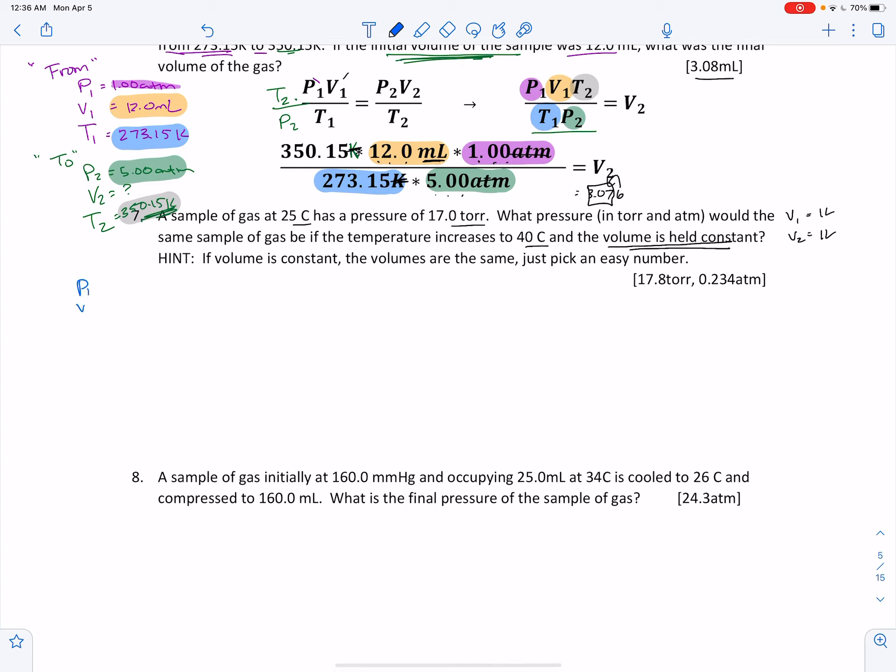So P1, V1, T1. Again, I'm looking for a pressure unit. Here is a pressure unit. 17.0 torr. I'm looking for a volume. Remember, this says constant. And then T1, okay, it's at 25. So this is like the initial. See how this increases to 40? That's a later on number. So this is 25. And I'm going to go ahead and put in the 273.15 just to remind myself that that was not in the right unit.